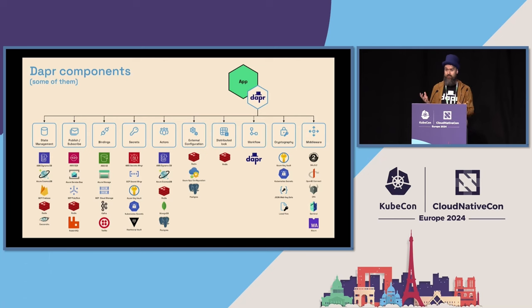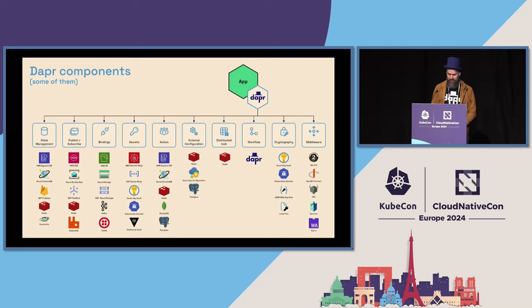cloud provider state store, for instance. It's a really flexible framework to use, and there are over 120 different components across all of the APIs.